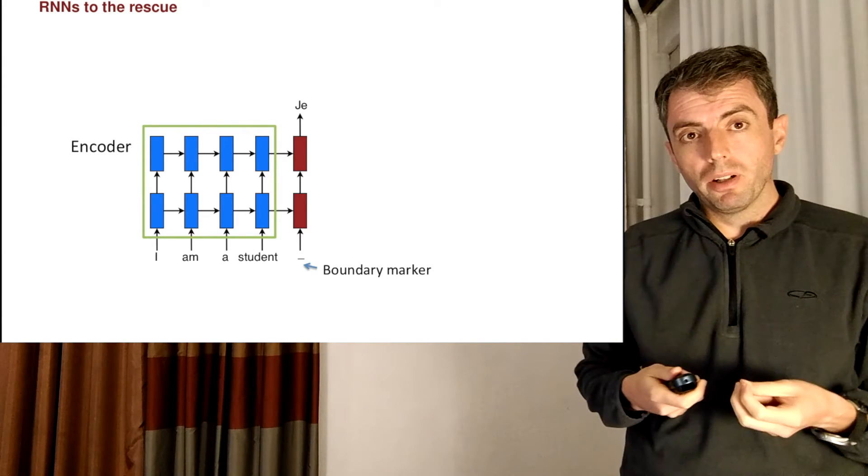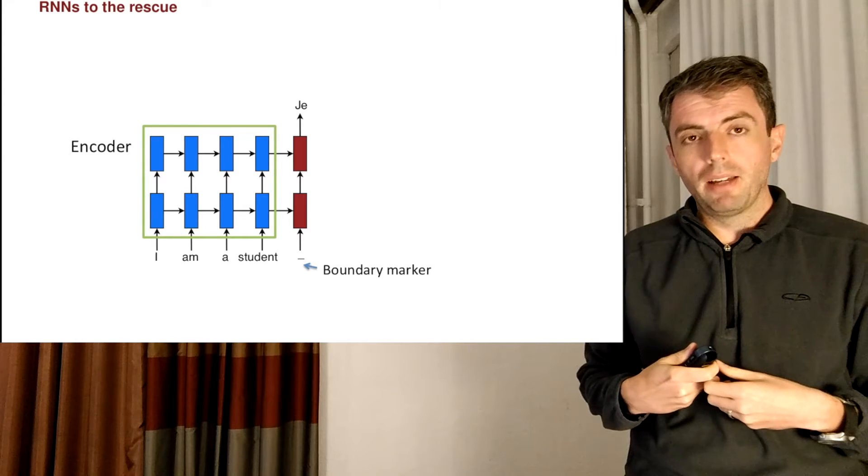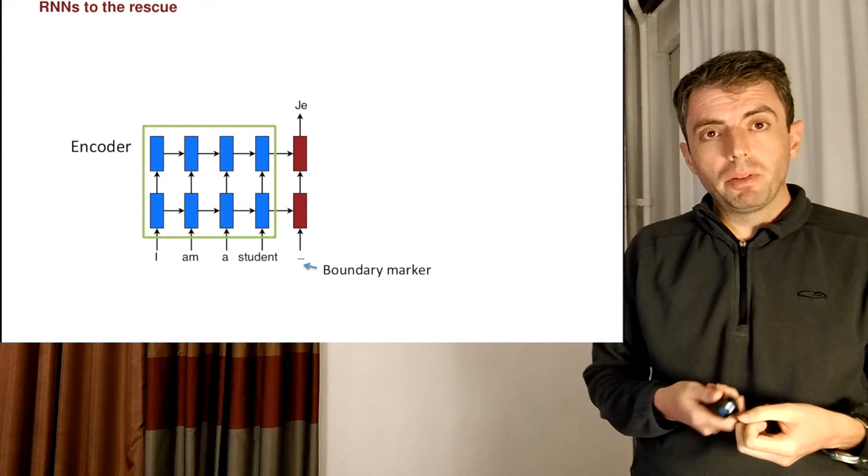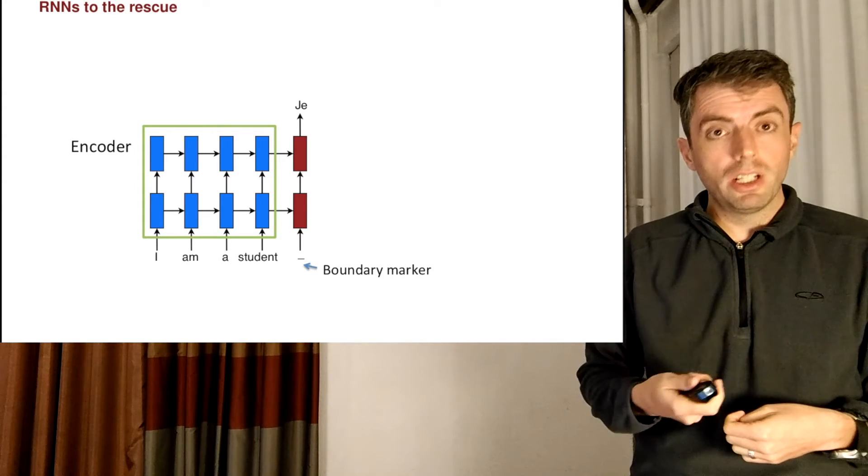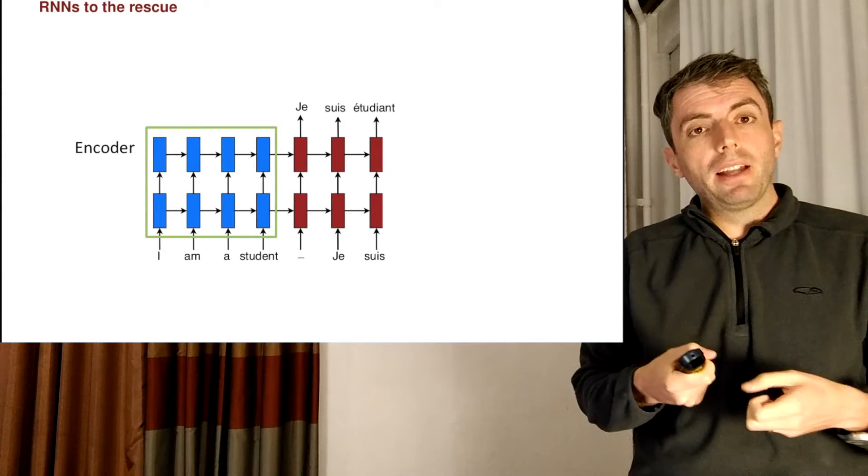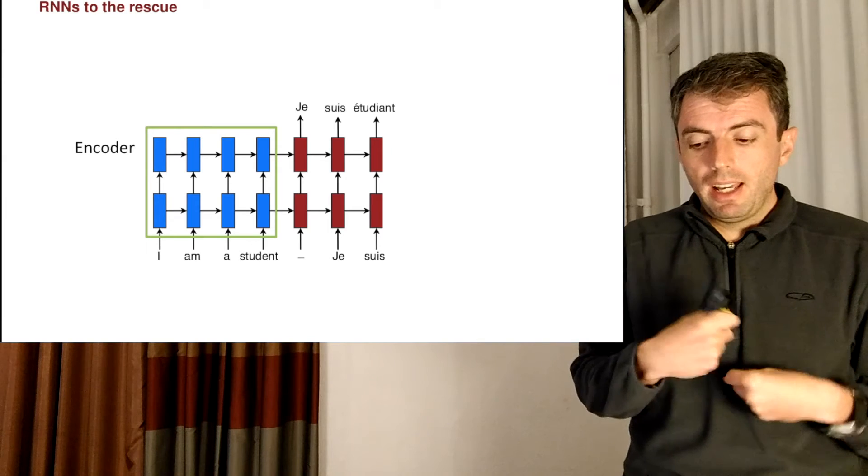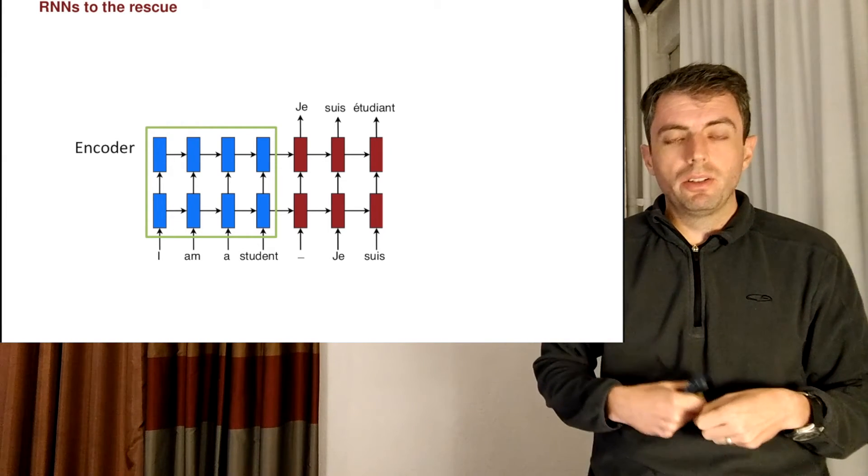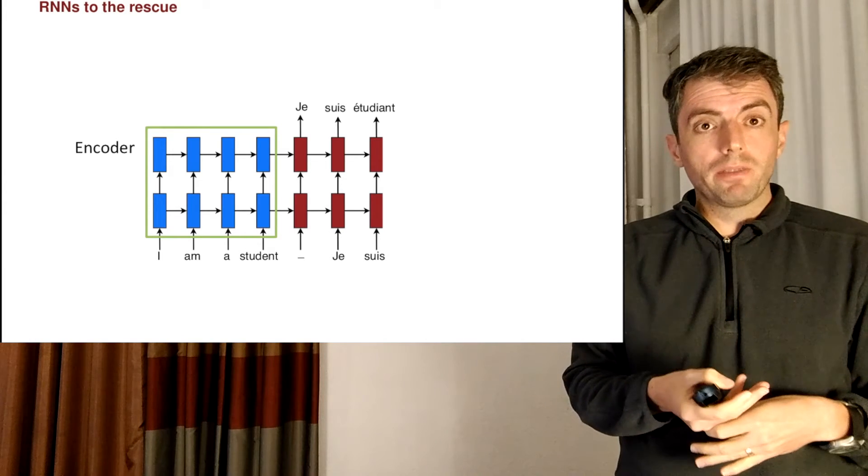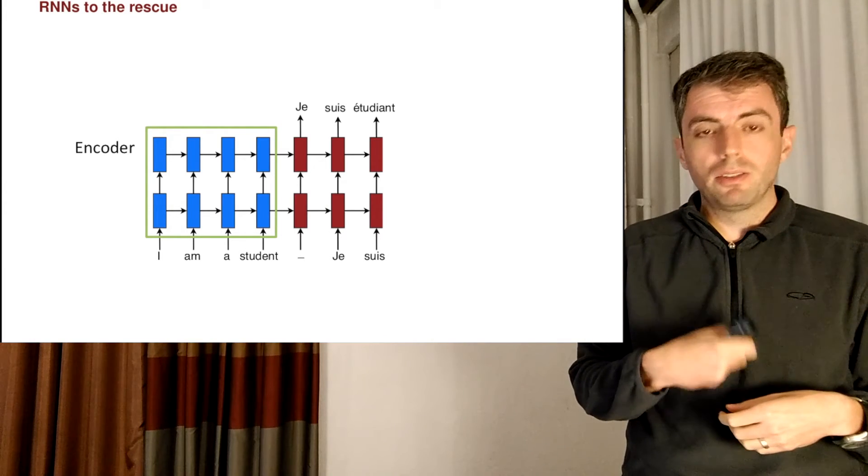And from that boundary marker input, the hidden layer needs to then output the French word je. And from that French word, we're now going to go forward in time. And the next input to the decoder is going to be that first French word je. And we'll continue that process.